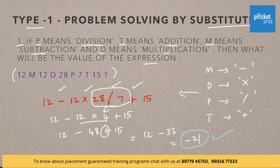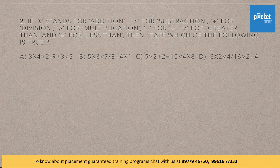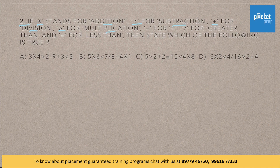This is the answer. Let us solve another question. If multiplication stands for addition, less than stands for subtraction, addition stands for division, greater than symbol stands for multiplication, minus stands for equal to, equal to stands for less than. Then state which of the following is true.